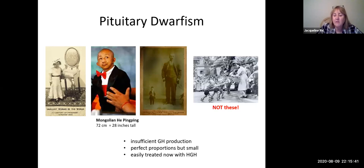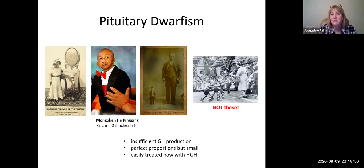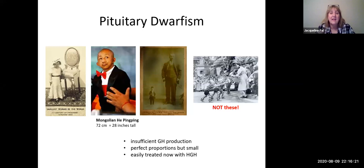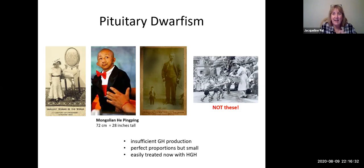If you have insufficient growth hormone production from a young age, you do not grow up like a normal adult. You have perfect adult proportions, but you are the size of a two-year-old — somewhere around two to two-and-a-half feet tall. Nowadays this can be easily diagnosed in childhood and treated with human growth hormone. This disease is known as pituitary dwarfism, which is not the same as achondroplastic dwarfism seen in the Wizard of Oz — that is an inherited disease. Pituitary dwarfism is a growth hormone deficiency disease.